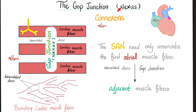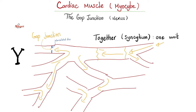The gap junction contains proteins known as connexins. It allows the flow of nerve impulses and of calcium — because calcium is the hero of contraction of cardiac muscles. That is why the right atrium beats in synchrony with the left atrium, and the right ventricle beats at the same time as the left ventricle. Cardiac muscle fibers are branched, with intercalated discs containing gap junctions or Nexus. The function of connexins is to allow all muscle fibers to contract together as one unit — we call this syncytium, meaning in synchrony.